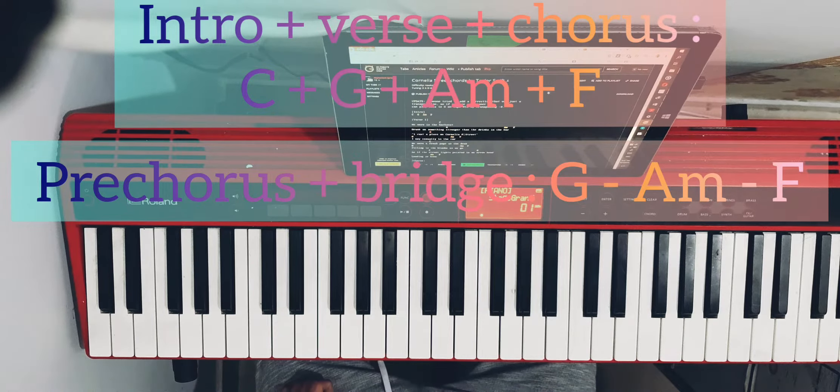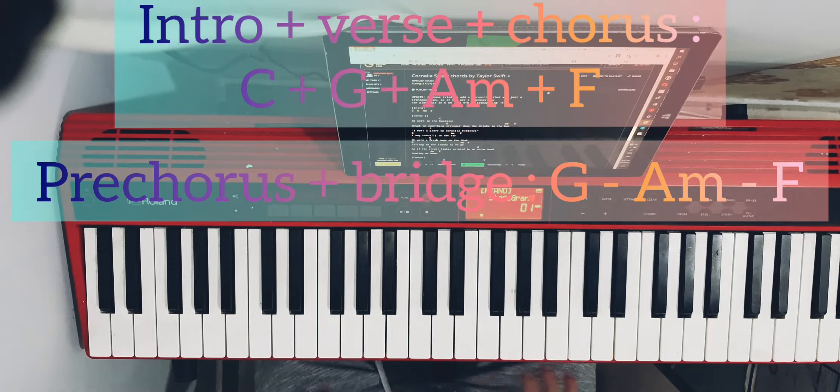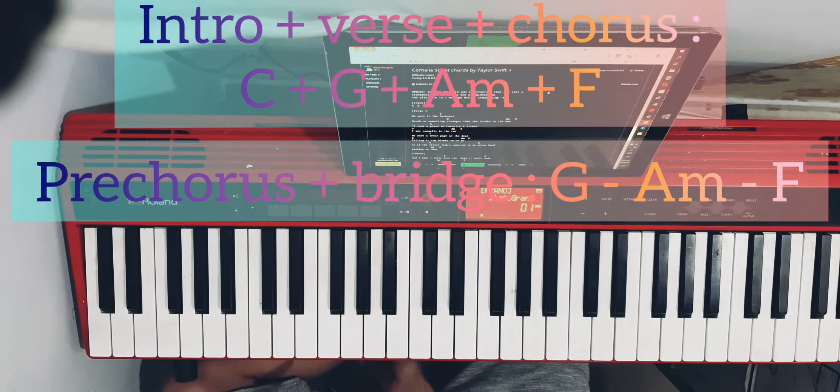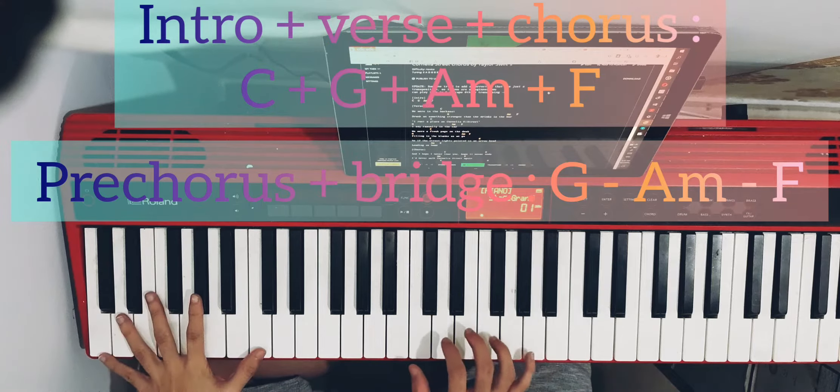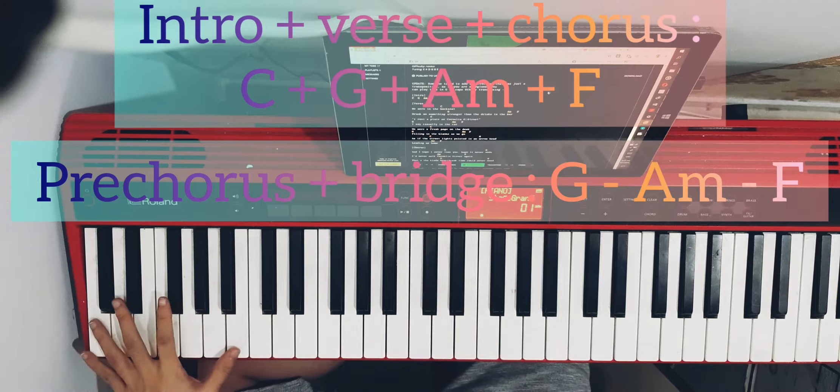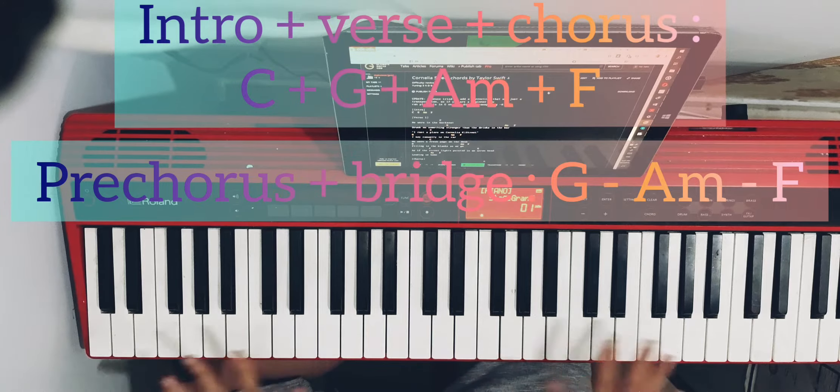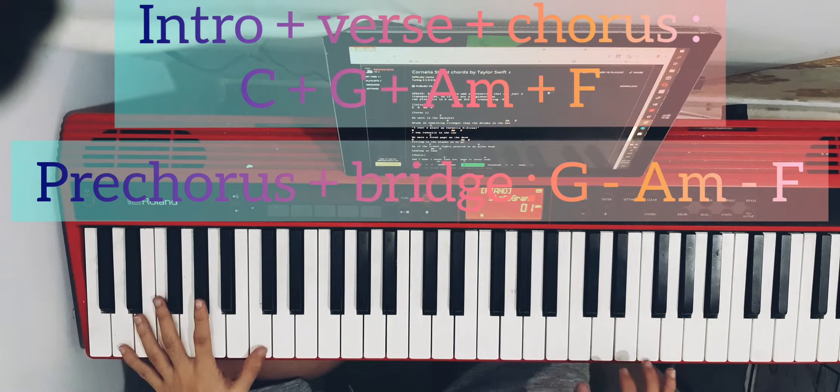Hi everyone, welcome or welcome back. Today we are going to learn Cornelia Street by Taylor Swift from her album Lover. If you're new here, hi, and if you find it useful please like and subscribe to my channel. I really appreciate it. First of all, this song is pretty easy - it's only four chords.